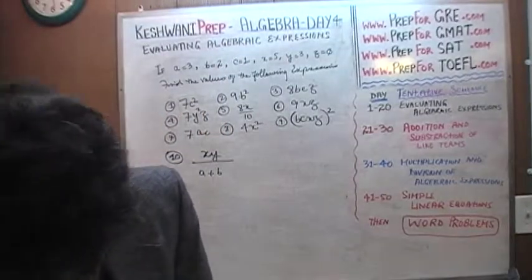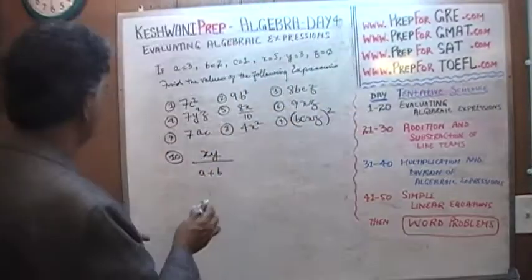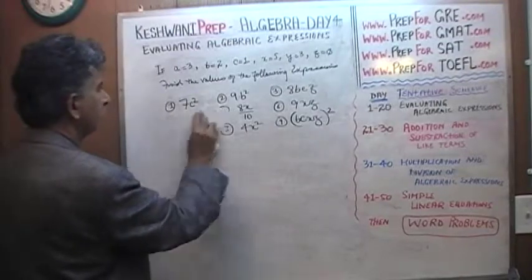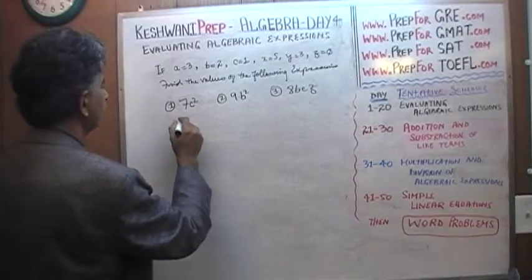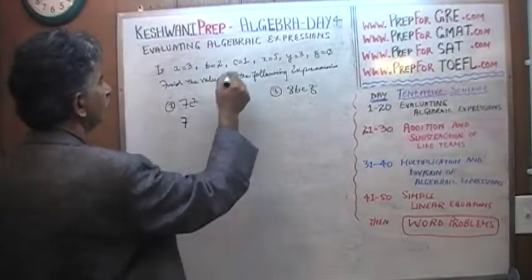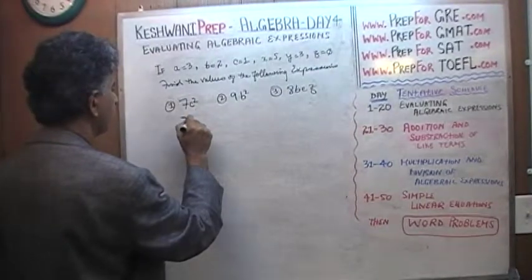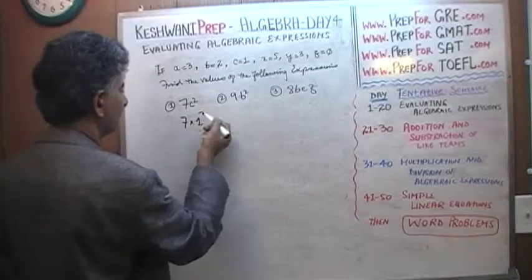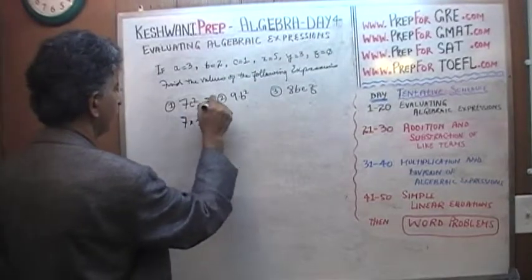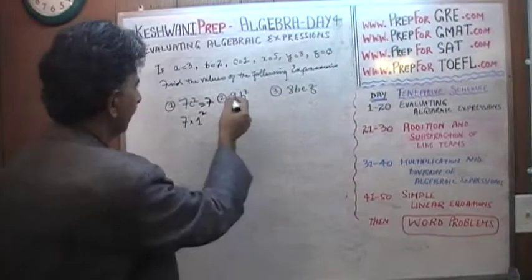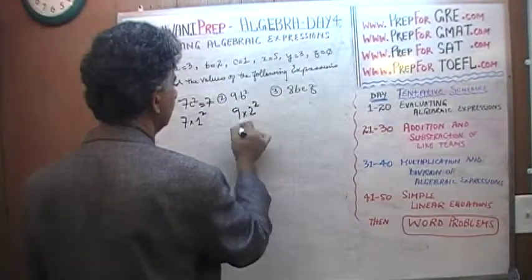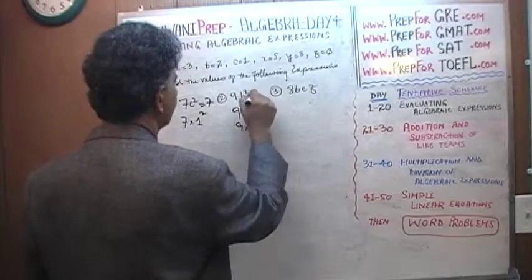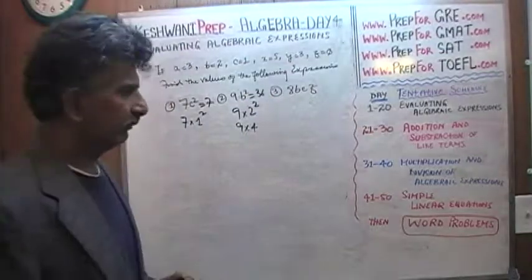Alright, number 1, 7c squared. 7, c squared, oh that's very simple, straightforward. c is 1, 1 squared is 1, so it's just 7, because 7 times 1 is 7. Number 2, 9 times b squared, b squared is 2, 9 times 4, which gives us 36.